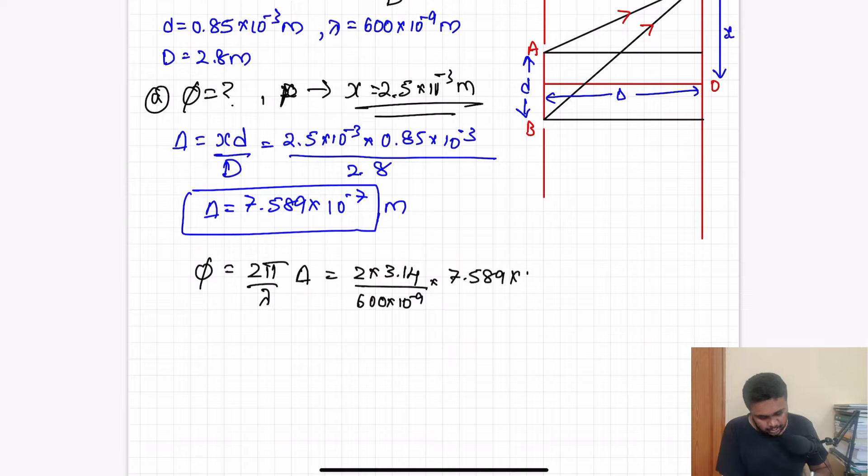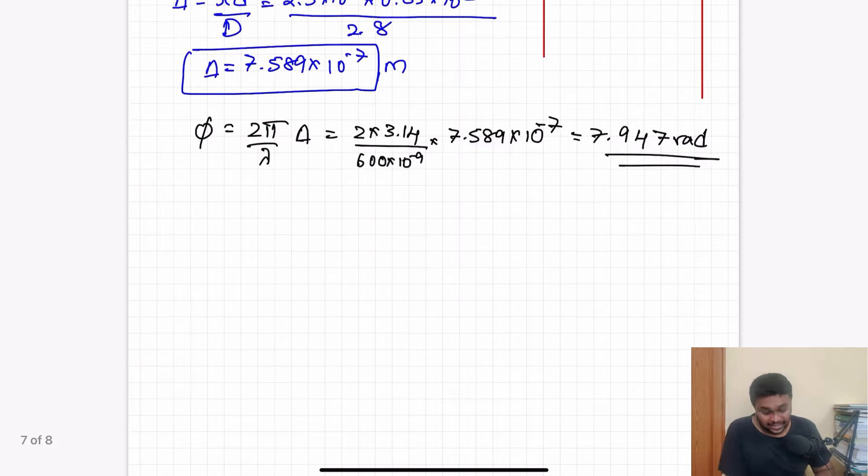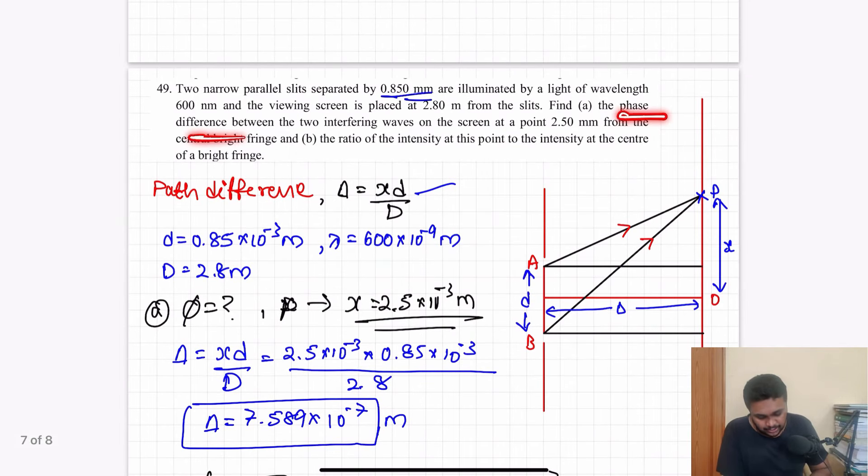What is the relation between path difference and phase difference? So phase difference phi is equal to 2 pi by lambda times the path difference. 2 into pi, 3.14, by lambda value 600 nanometer, 600 into 10 power minus 9, into path difference 7.589 into 10 power minus 7. The answer is 7.947 radians. Part A, phase difference.